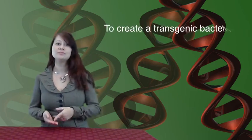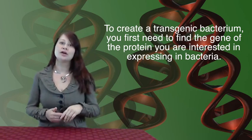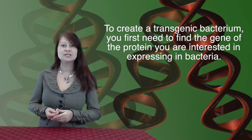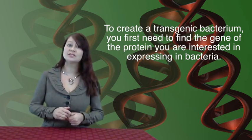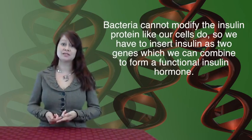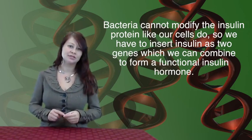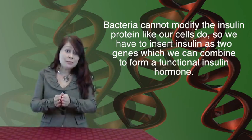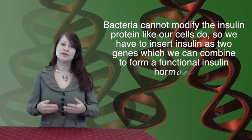So how is bacteria that synthesizes human insulin created? First, we have to locate the specific gene that encodes for the protein we want the bacteria to synthesize. In the case of insulin, we need to insert the human insulin gene into bacteria. But bacteria aren't going to be able to modify the insulin protein like human cells do in our pancreas, so we have to insert the insulin gene as two separate genes and then combine the two protein products to create a functional insulin hormone that resembles the human insulin protein.